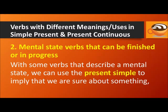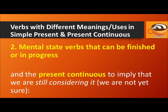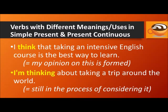Also, with some verbs that describe a mental state, we can use the present simple to imply that we are sure about something, and the present continuous to imply that we are still considering it — we are not yet sure. For example: I think that taking an intensive English course is the best way to learn — that means my opinion is formed, I am sure. But I'm thinking about taking a trip around the world means I'm still in the process of considering it.